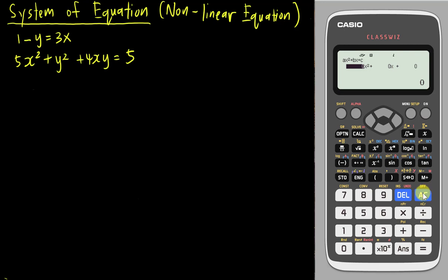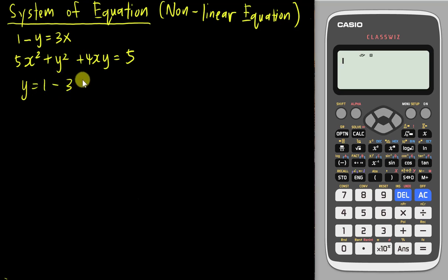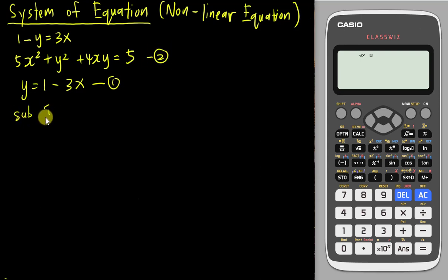Let's go back to the calculation. The first thing I want to do is make y the subject, so y equals 1 minus 3x — I'll call this my first equation. Then I will substitute my first equation into my second equation.